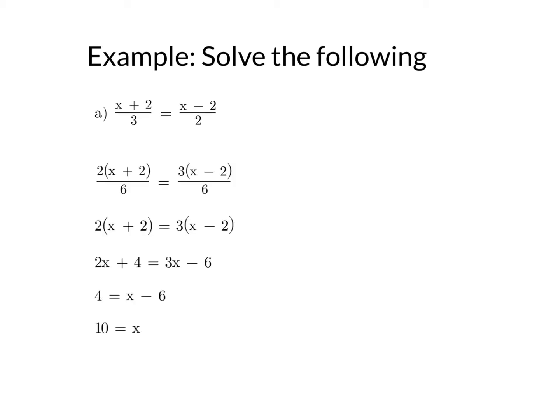So the first one, the common denominator is 6, so 3 and 2 go into 6. That means I need to times the first fraction by 2 on the bottom, and then I double the top as well. For the second one, it's over 6, so I need to triple the bottom, so I triple the top as well.